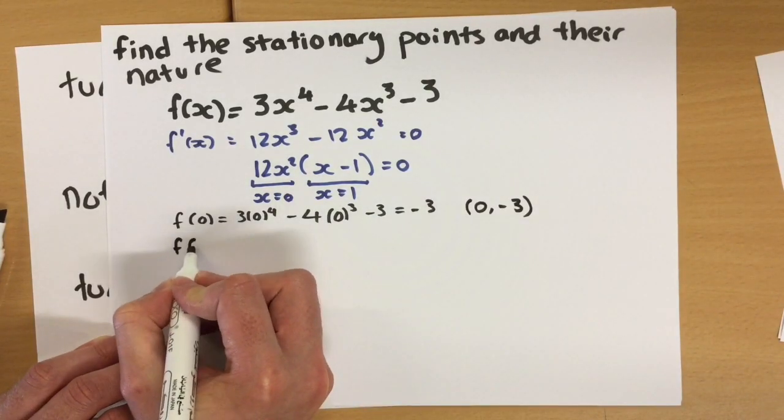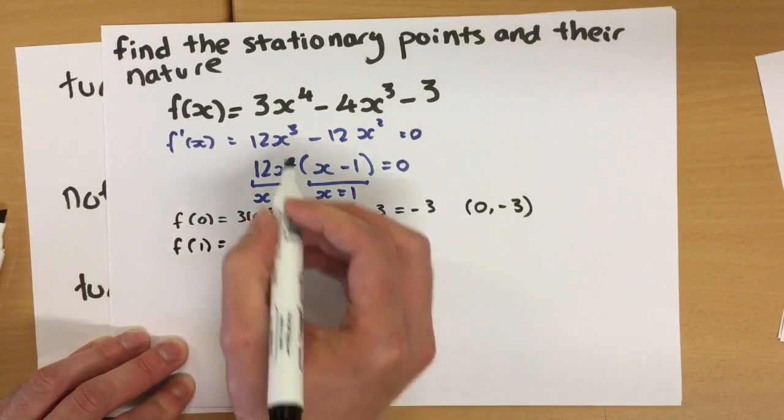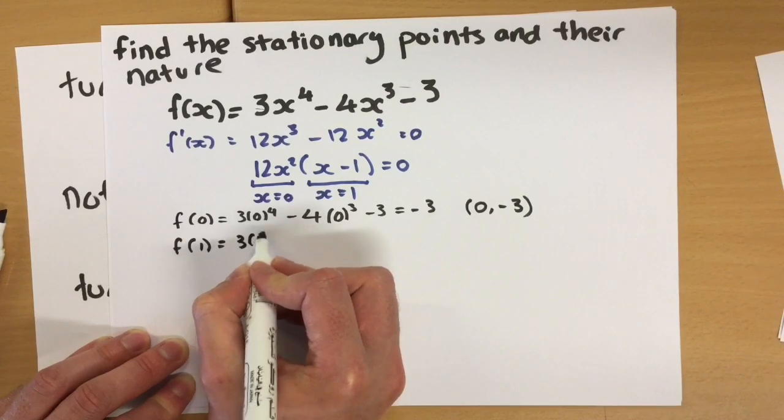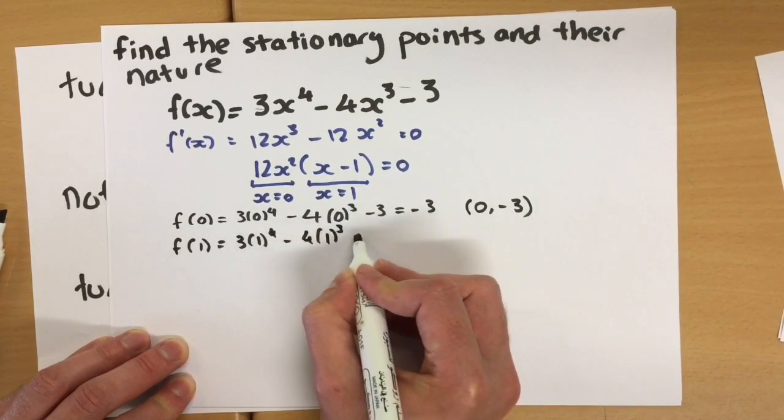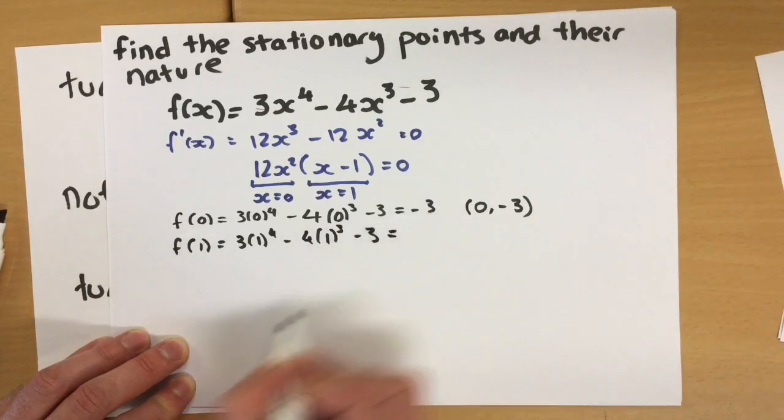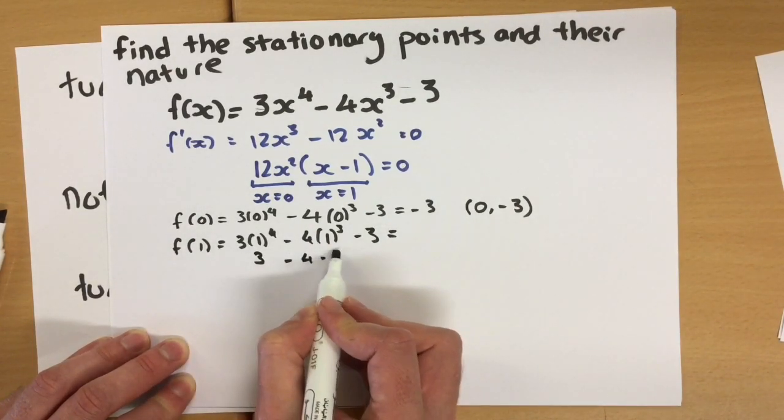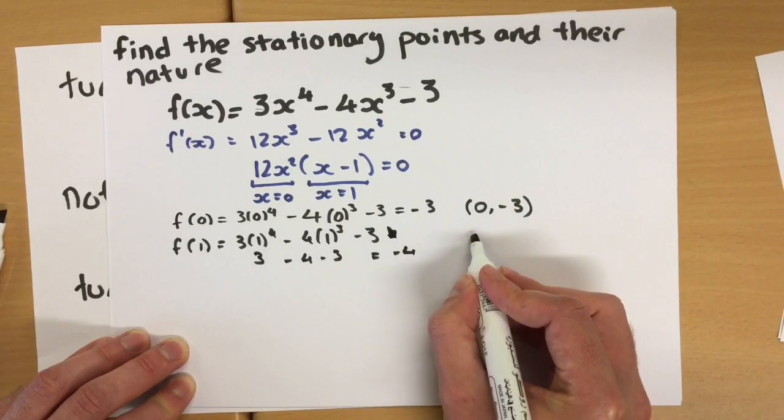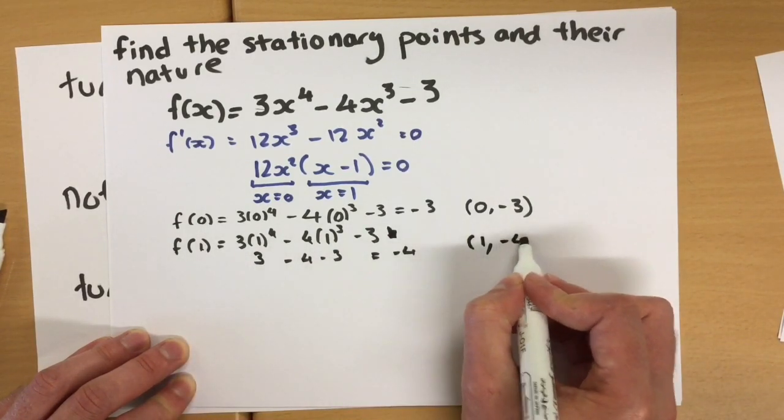Our second stationary point is that x is 1. So you substitute 1 into this equation. So it's 3 times 1 to the power of 4, take 4 times 1 cubed, subtract 3, which is 3 take 4 take 3, which is negative 4. So our second stationary point, where x is 1 and y is negative 4.